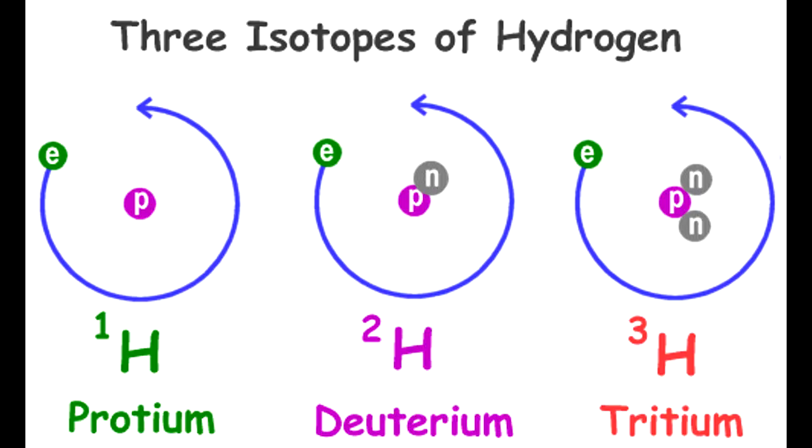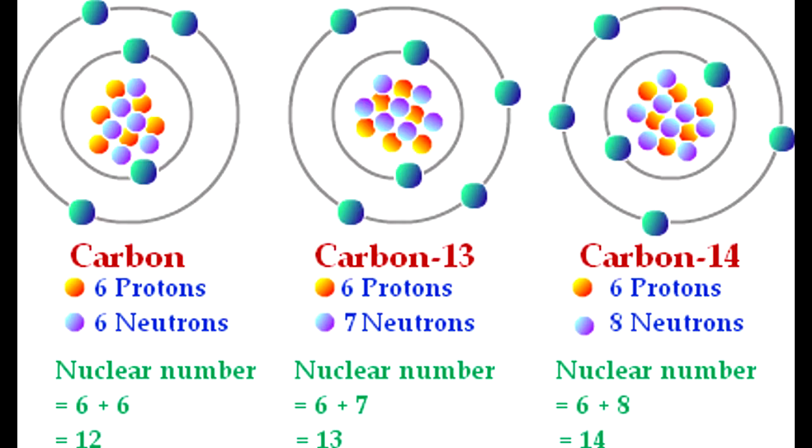Isotopes are different variations of the same element with an altered mass. Different isotopes of the same element have the same number of protons in their atomic nuclei but a different number of neutrons.